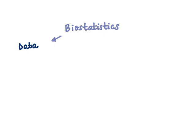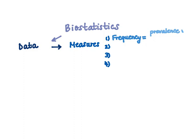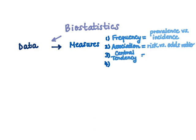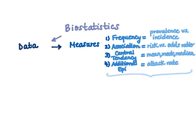First we'll go through the different types of data that exist, then we'll briefly look at different measures within epidemiology. Four specifically: number one being measures of frequency — examples include prevalence rates versus incidence rates. Two is measures of association — examples include risk ratio versus odds ratio. Three is measures of central tendency, defined as mean, median, and mode values. And lastly, additional epi measures such as the attack rate of a specific disease.